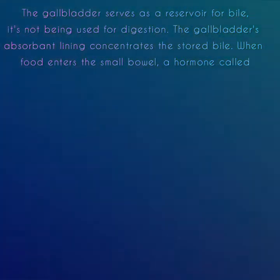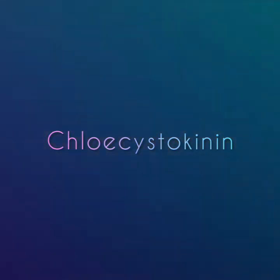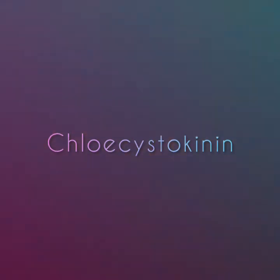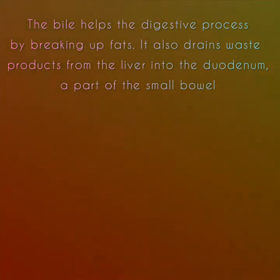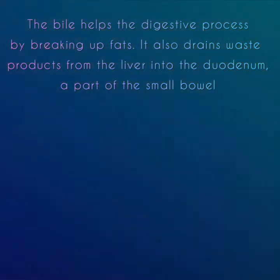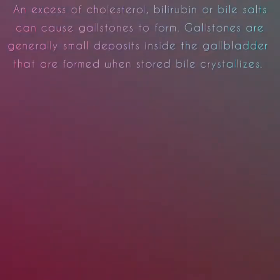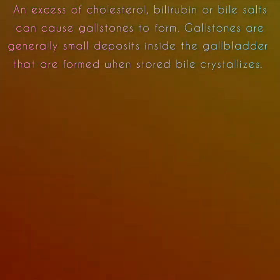The gallbladder's absorbent lining also concentrates the stored bile. When food enters the small intestine, cholecystokinin is released, signaling the gallbladder to contract and to secrete bile into the small bowel through the common bile duct. The bile helps the digestive process by breaking up fats. It also drains waste products from the liver into the duodenum, a part of the small intestine.